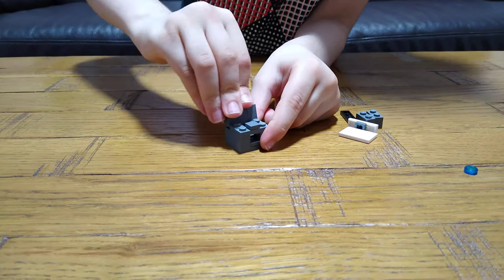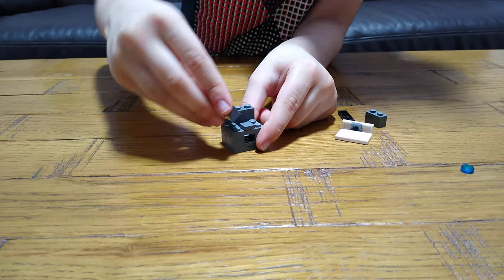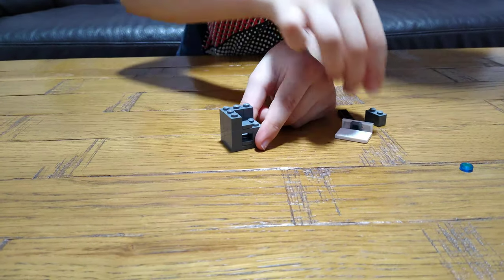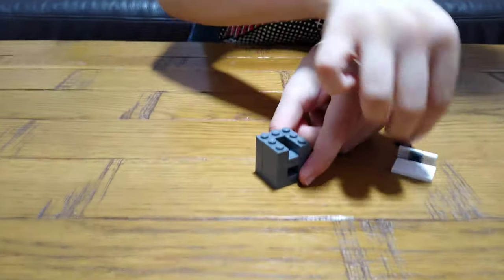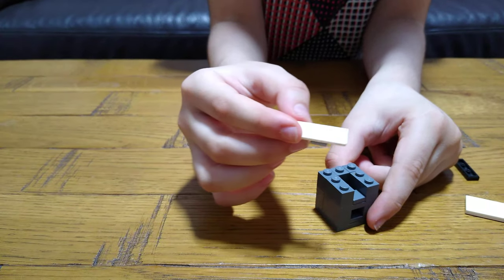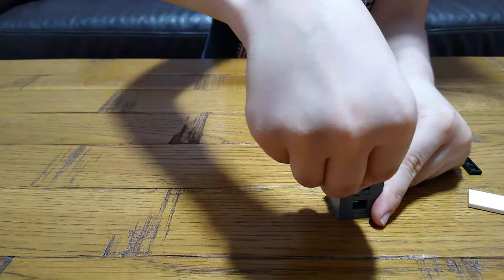And then put it on the back, and then put two of these 1x2 bricks on, and then one of these flats with a stud on.